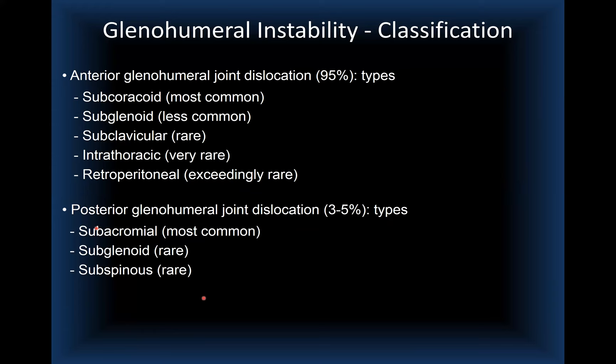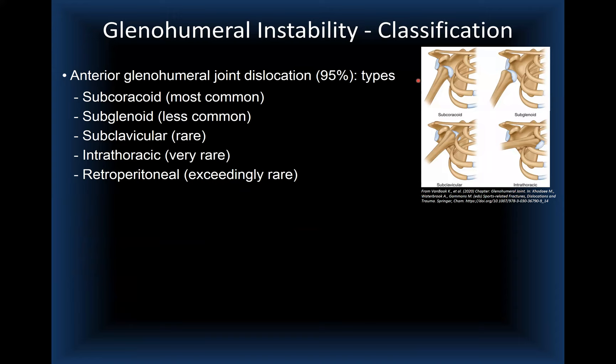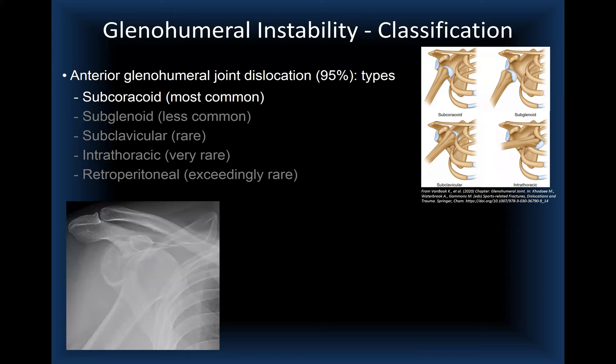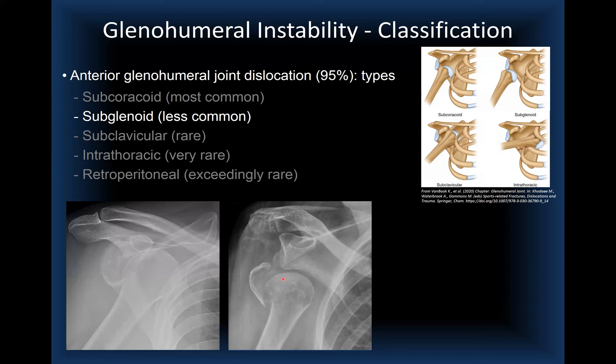Superior and inferior glenohumeral dislocations are quite uncommon. Here is a diagram from the literature showing the main subtypes of anterior dislocation: subcoracoid (most common), subglenoid, subclavicular, intrathoracic, and retroperitoneal. A case example demonstrates the classic subcoracoid anterior dislocation, with the humeral head resting anteriorly underneath the coracoid process.